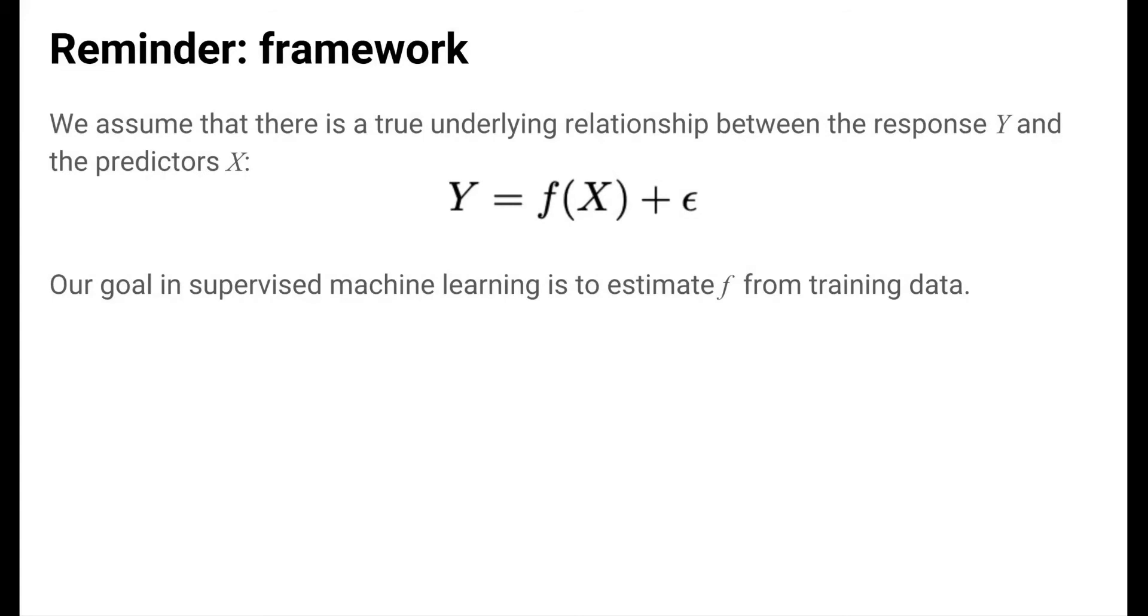Let's remind ourselves of the regression framework. In the regression framework, we assume that the quantitative response variable y is some function f of the predictors x plus an error term. Our goal in supervised machine learning is to estimate the function f from training data. This is a really hard problem. This function f could be anything. How can we tackle the difficult problem of learning f?